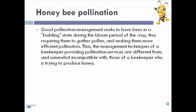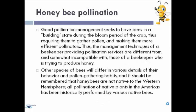A honeybee deliberately gathering pollen is up to 10 times more efficient as a pollinator than one primarily gathering nectar and only unintentionally transferring pollen. Good pollination management seeks to have bees in a building state during the bloom period of the crop, requiring them to gather pollen and making them more efficient pollinators. The management techniques of a beekeeper providing pollination services are different from and somewhat incompatible with those of a beekeeper trying to produce honey. Other species of bees differ in various details of behavior and pollen-gathering habits, and honeybees are not native to the Western Hemisphere — all pollination of native plants in America has historically been performed by various native bees.